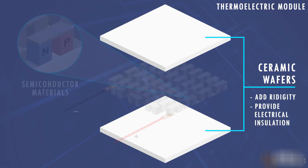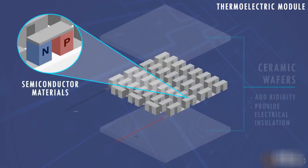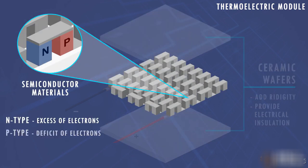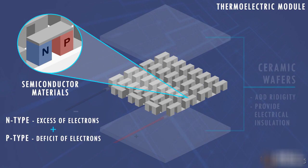N-type semiconductors have an excess of electrons while P-type semiconductors have a deficit of electrons. By combining one N and one P, a thermoelectric couple is created.